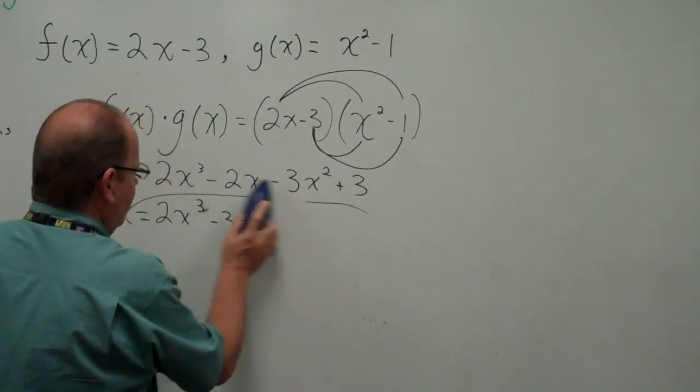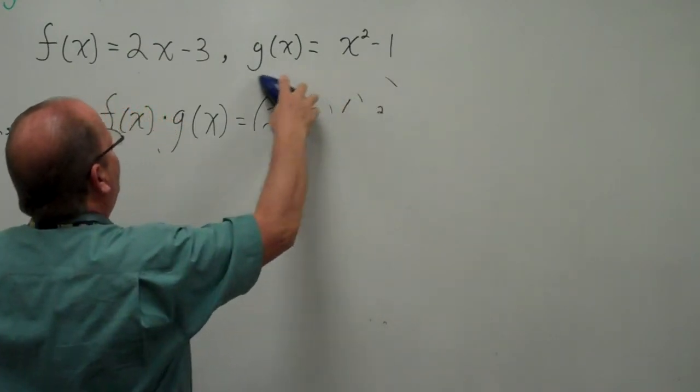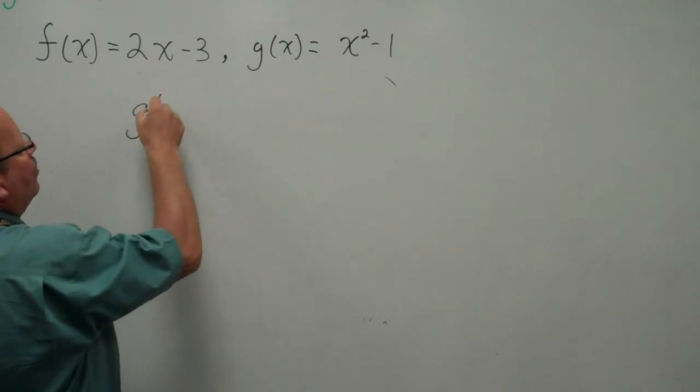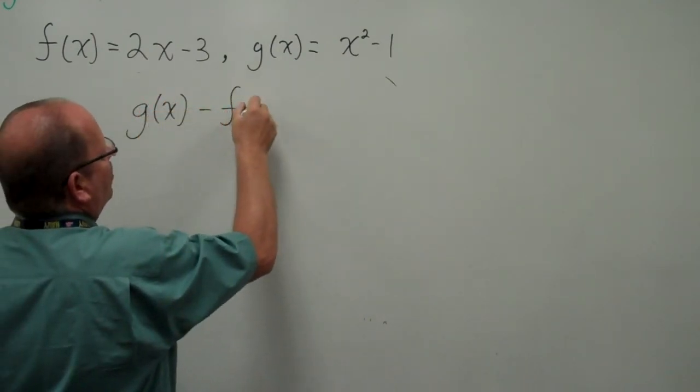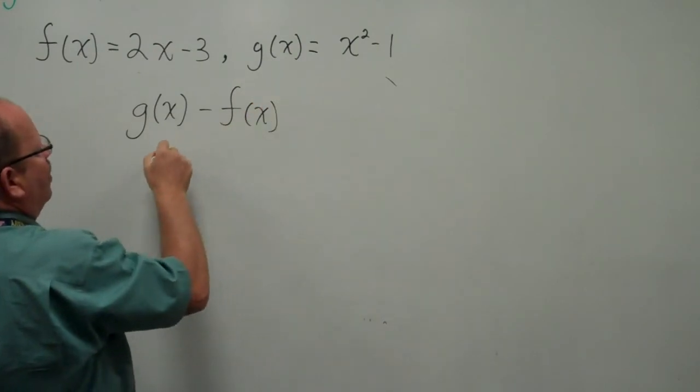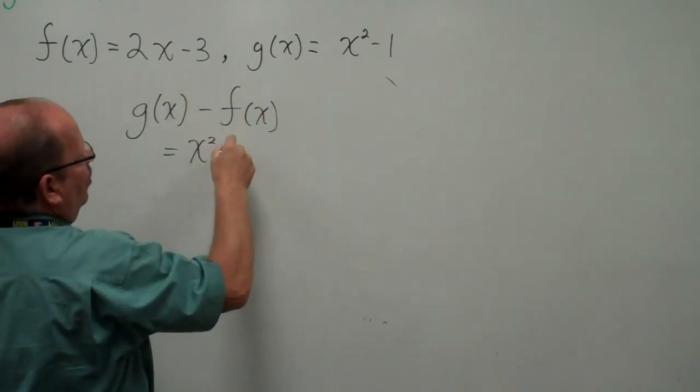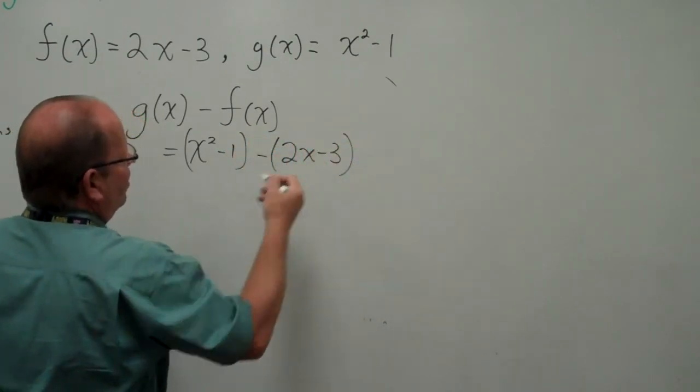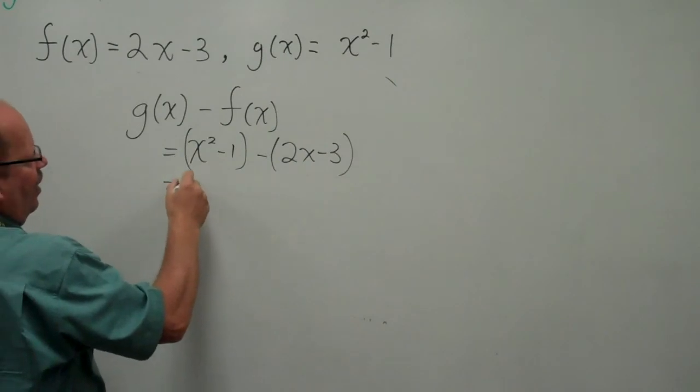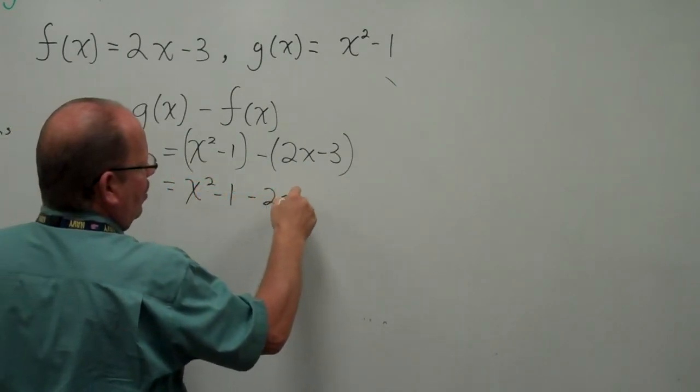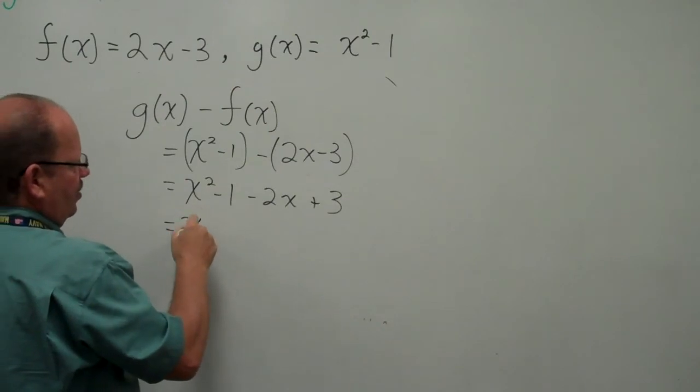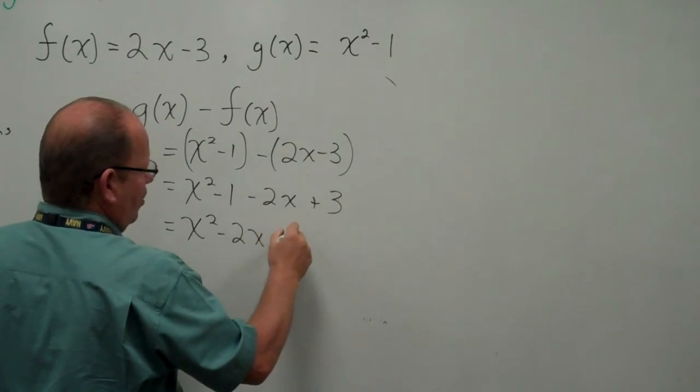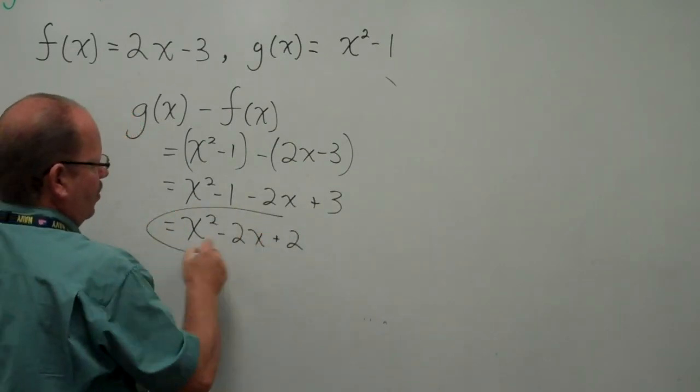Think about it, and let's look at a function composed of a function. Oh, good question in the back row there. Can I do g(x) - f(x)? Well, of course I can. That would simply be (x² - 1) - (2x - 3) = x² - 1 - 2x + 3 = x² - 2x + 2.